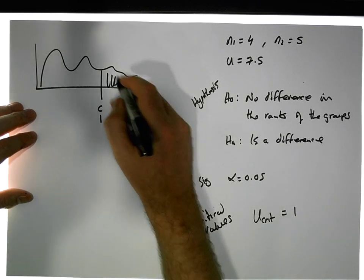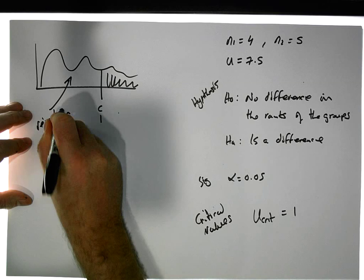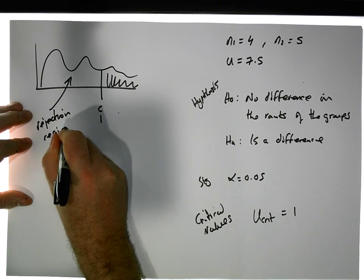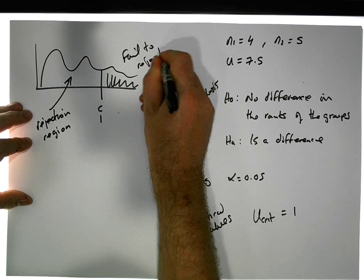Let's assume we have some sort of distribution. We've just figured out our critical value, it's equal to 1, and this is our rejection region. This is our fail to reject, and this here is our rejection region.